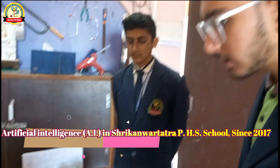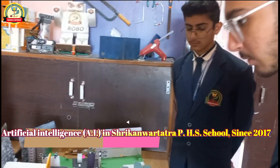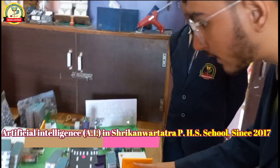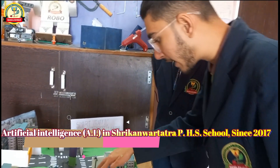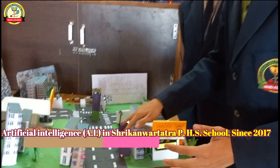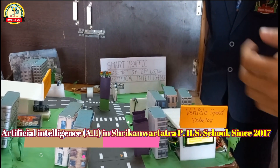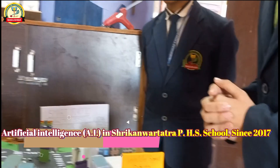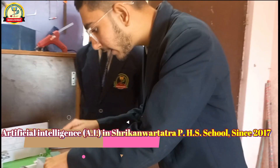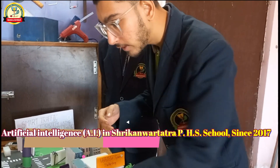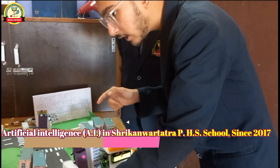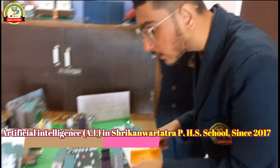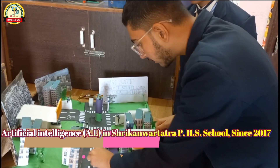We will measure the speed of the vehicle using IR sensors, Arduino, and a 16x2 LCD through our Vehicle Speed Detector. We are using two IR sensors placed at a certain distance of 5 cm. To measure speed, we need distance and time. The first IR sensor will detect whether a vehicle is present in front of the sensor or not. Then the timer will start, and we will measure the duration up to the second IR sensor.